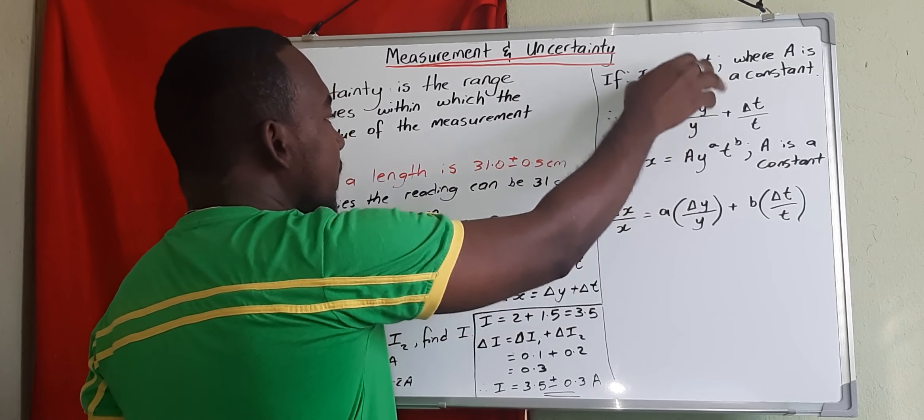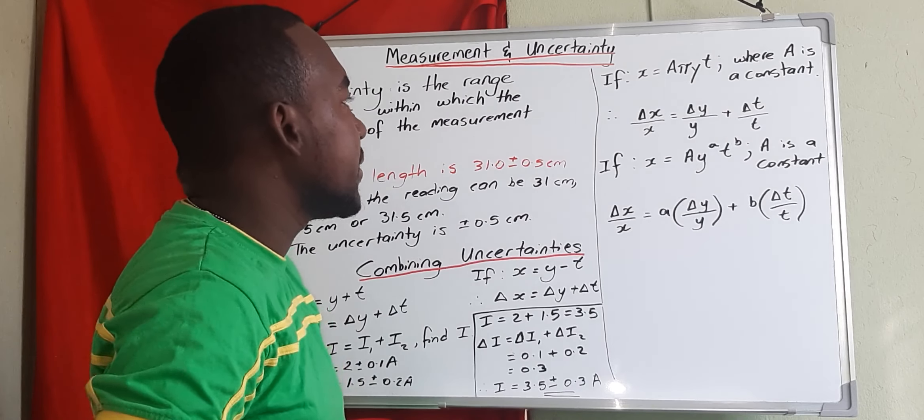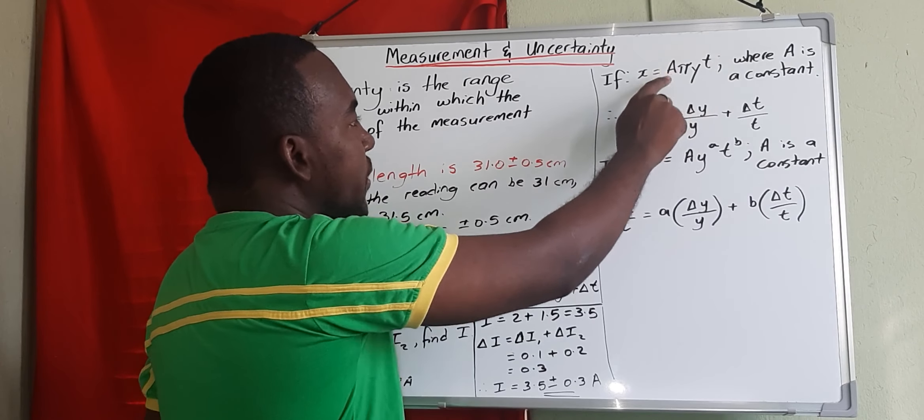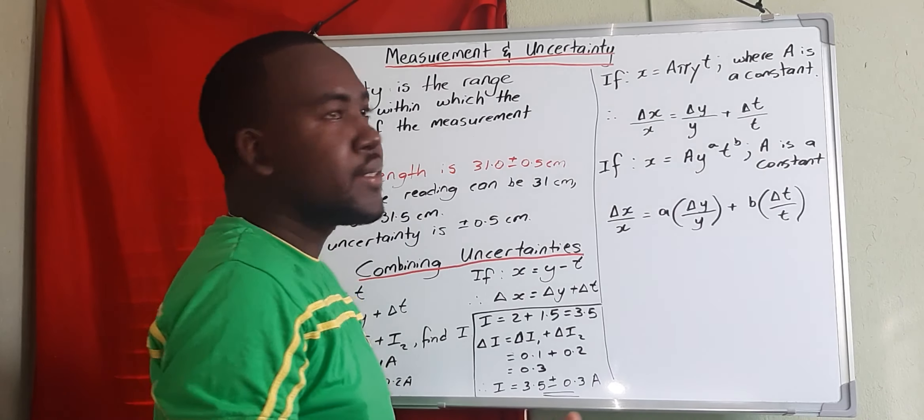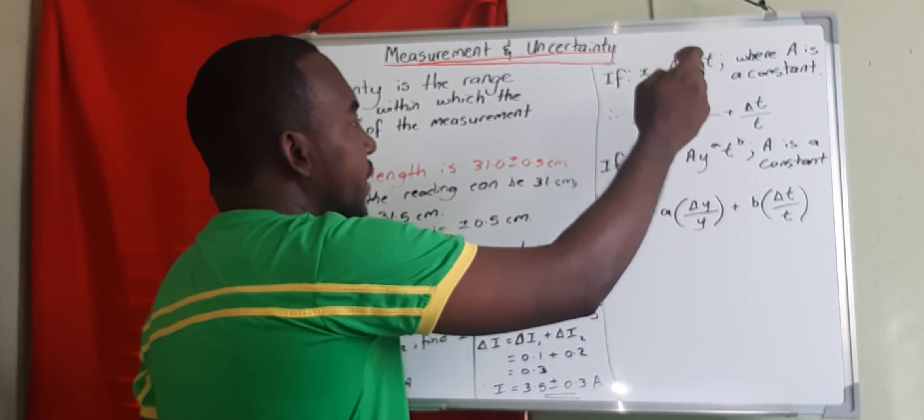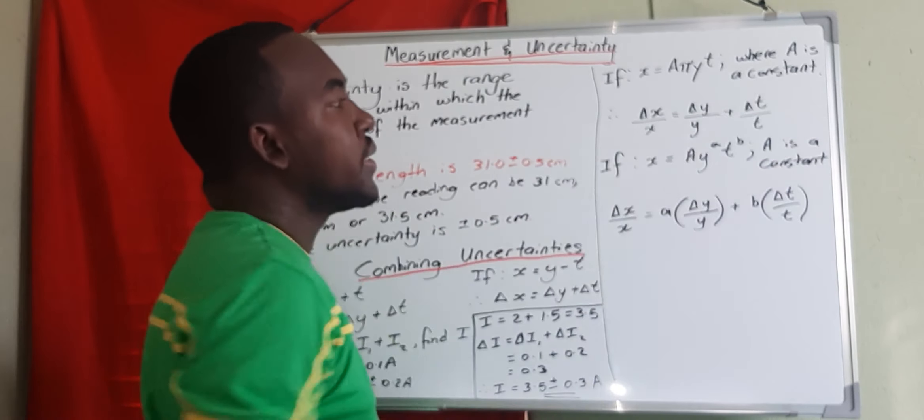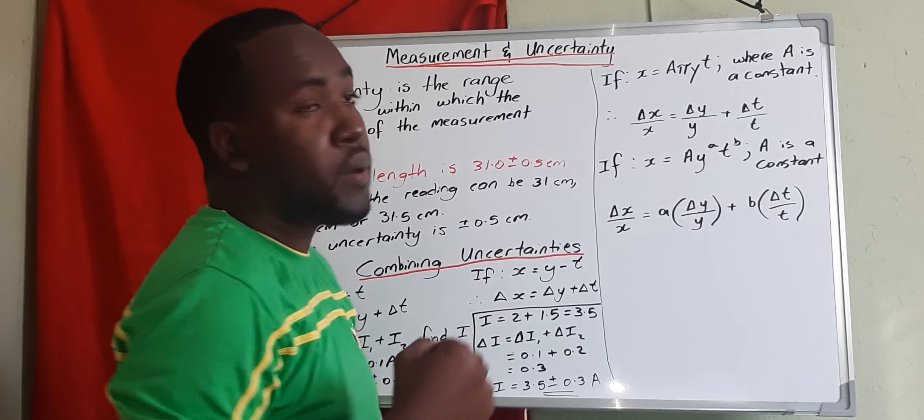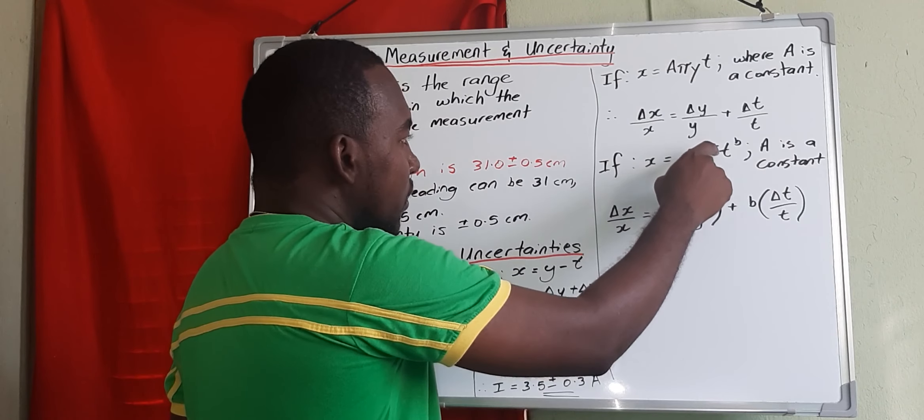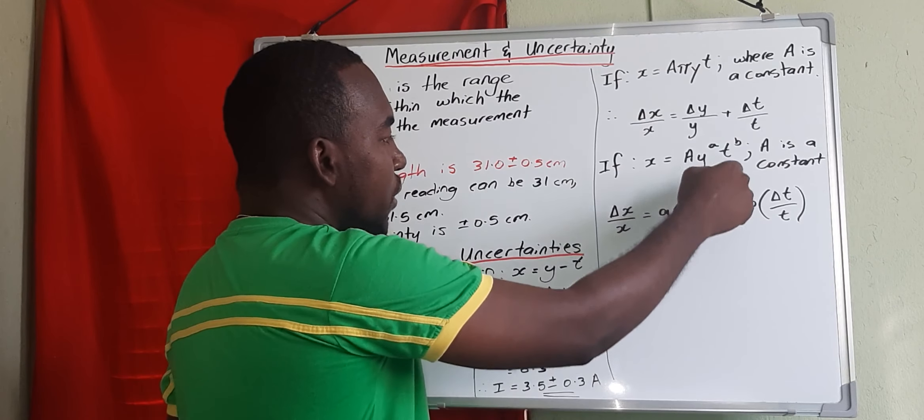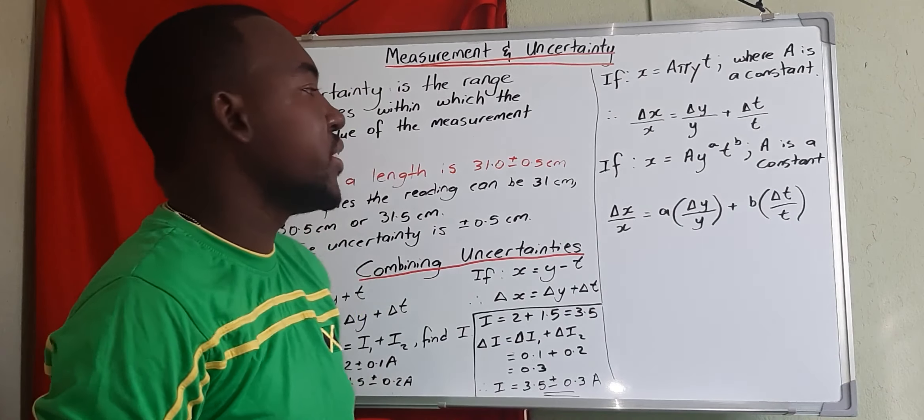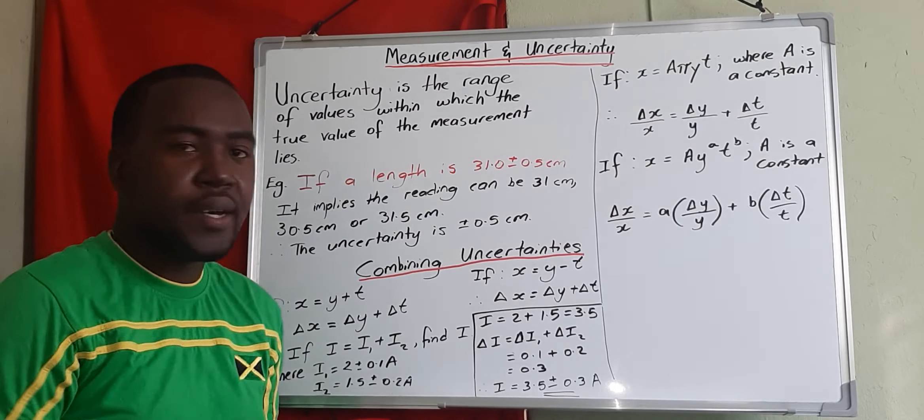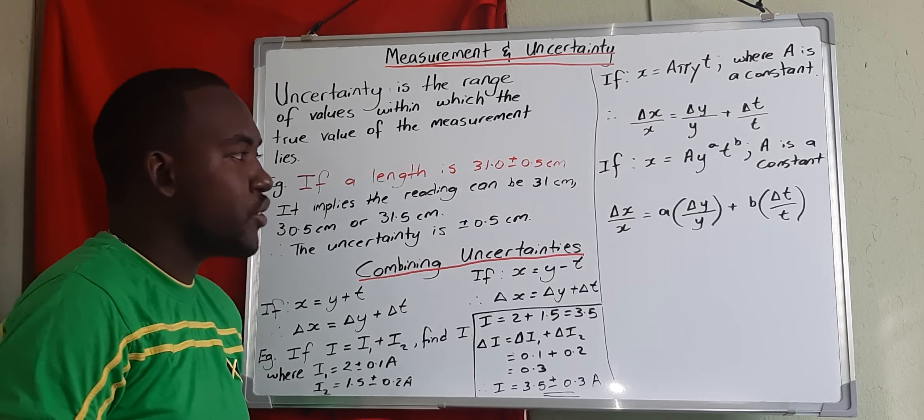Therefore this is known as our fractional uncertainty. It's the uncertainty of x over the value of x equals the uncertainty of y, because a and pi are constants, over y value plus the uncertainty of t over the value of t. And if we include values of powers, then the power will be brought down to multiply between our fractional uncertainty. So these are two laws that you need to know, and let's use this one in an example that I'll show.